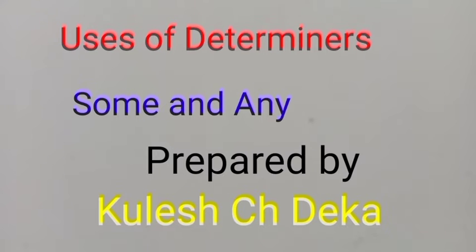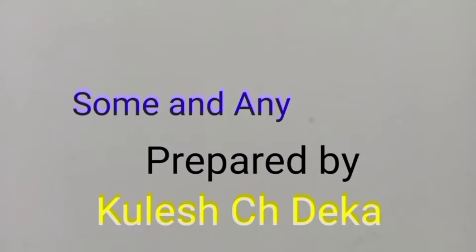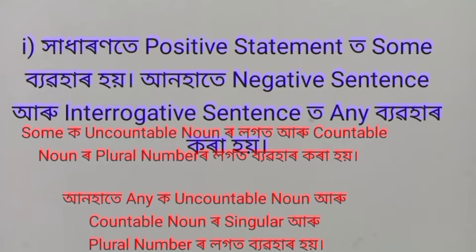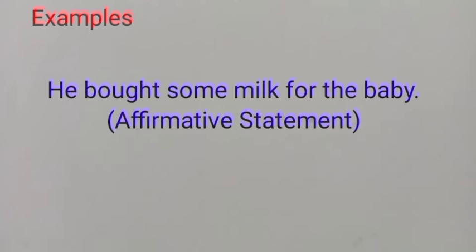Some and any are very different. He bought some milk for a baby — this is about the affirmative sentence. 'Some milk' is uncountable.